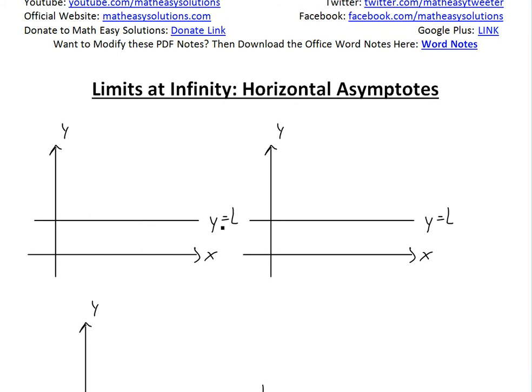So if we have a line like this, y equals L, you could have a function that goes something like this and then gets closer. As it goes to positive infinity, it's getting closer and closer to L but never reaches it, so that is an asymptote.